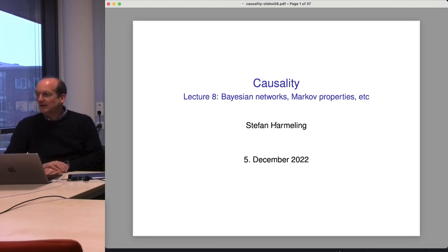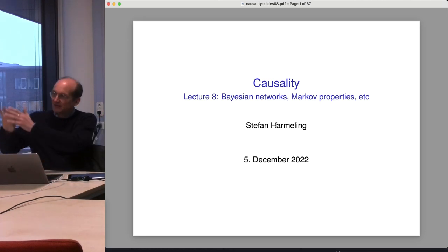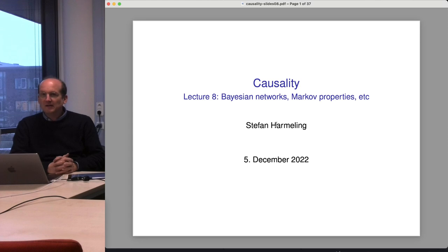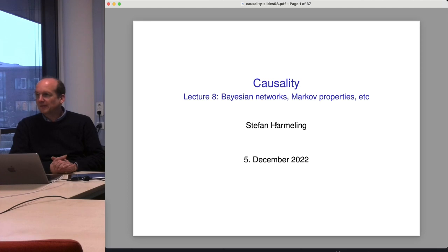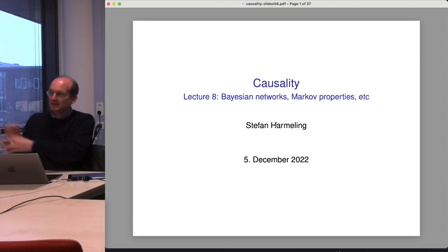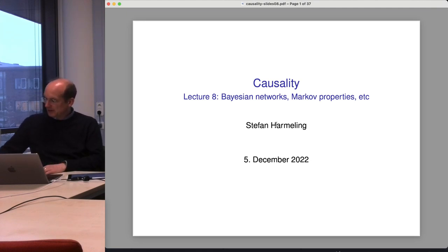We have already used Bayesian networks intuitively by drawing graphs of structural causal models. However, additionally to structural causal models there are also Bayesian networks. Historically, in Judea Pearl's works they are older — more from the 90s. He wrote a book called 'Probabilistic Reasoning in Intelligent Systems' which was all about Bayesian networks, with some sections on causal interpretation that came later. So we go back into the past and I will tell you all about Bayesian networks — why they are useful and what they are designed for.